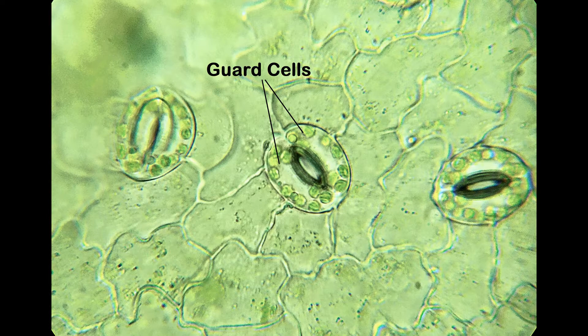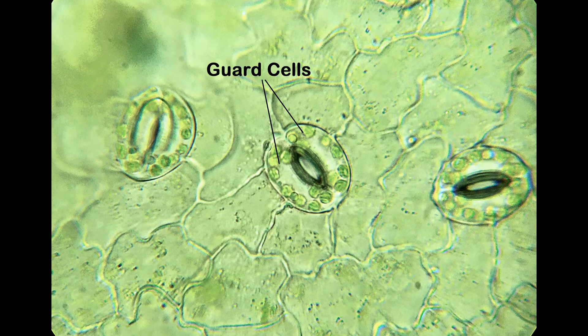These cells control the opening and closing of a stoma. They open when the guard cells are turgid and close when they become flaccid.